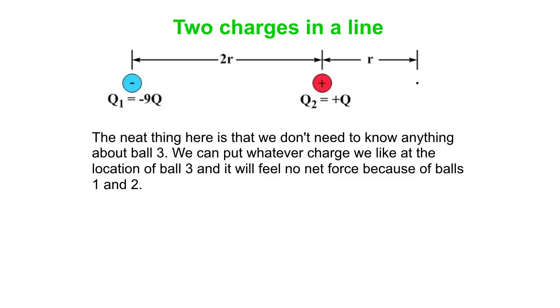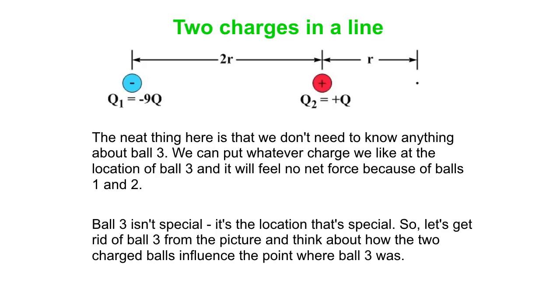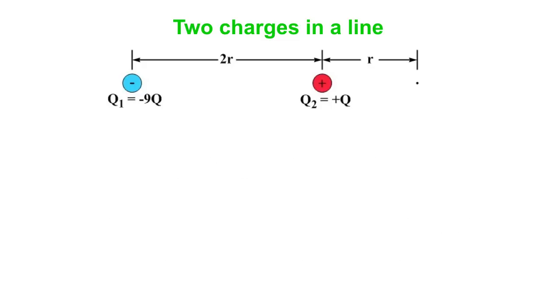The neat thing here is that we don't need to know anything about ball three except that it's in equilibrium. We can put whatever charge we like at the location of ball three and it still feels no net force because of balls one and two. That means ball three isn't special at all—it's the location that's special. We'll get rid of ball three from our picture and think about how the two charged balls influence the point where ball three was.